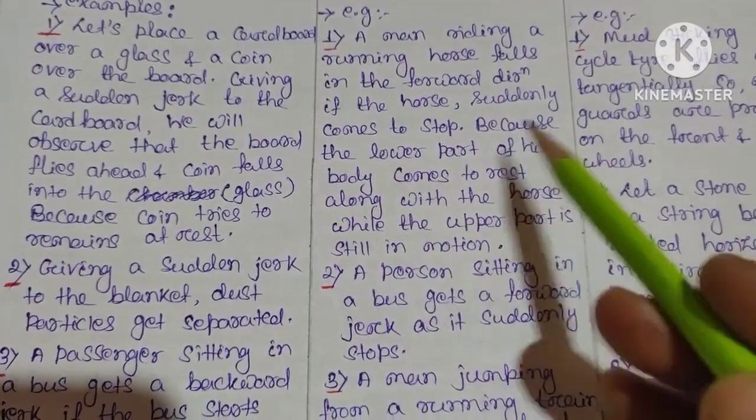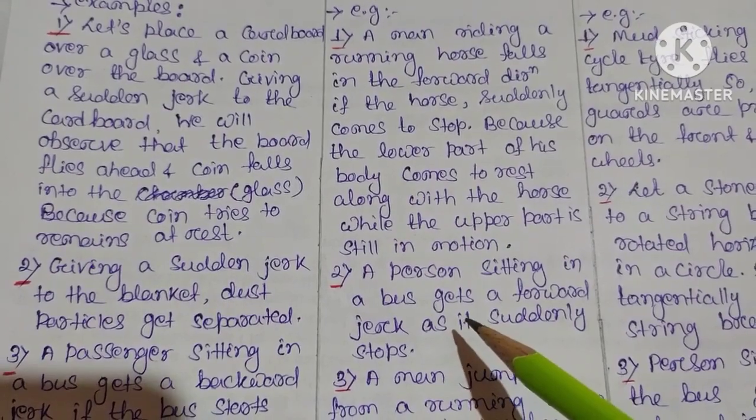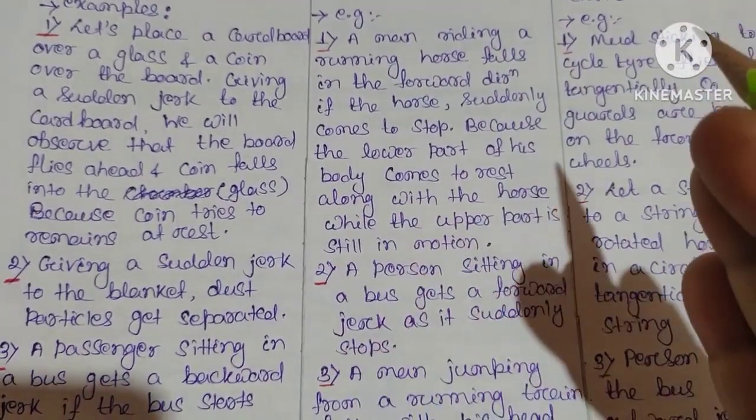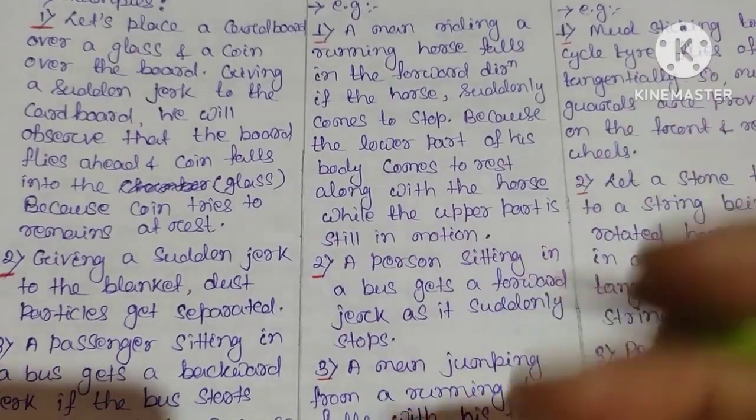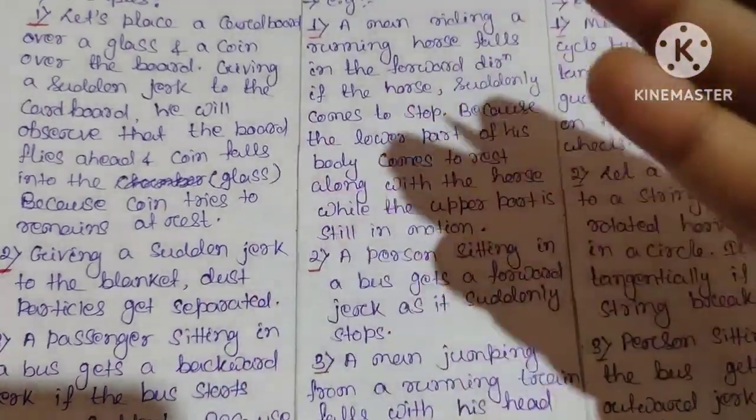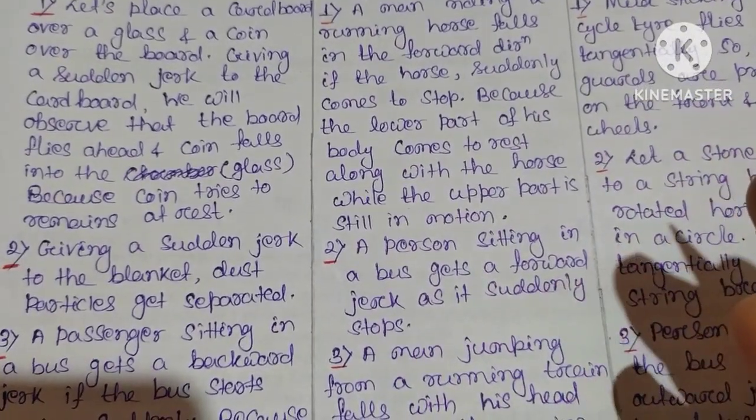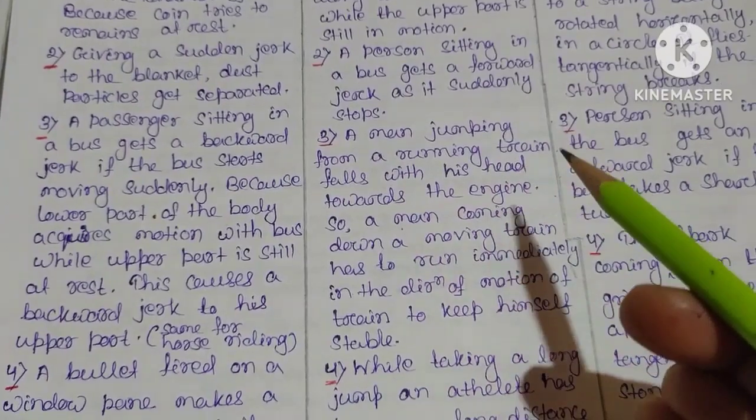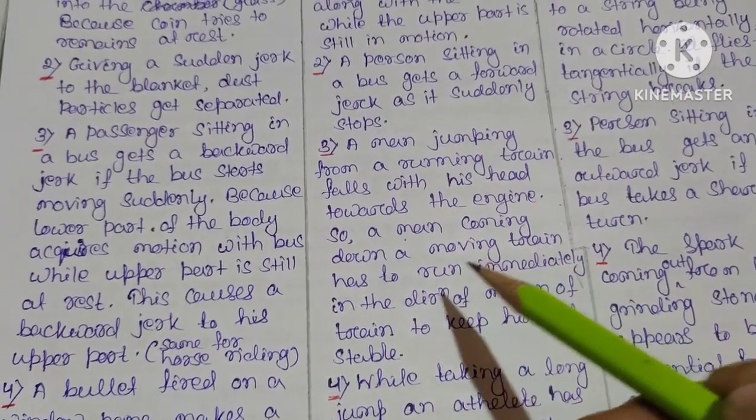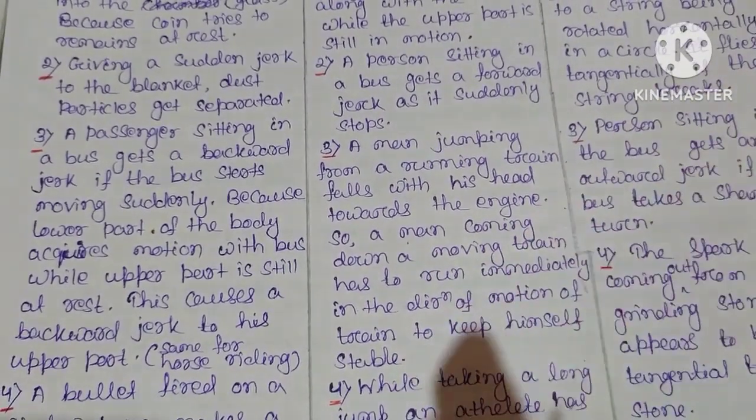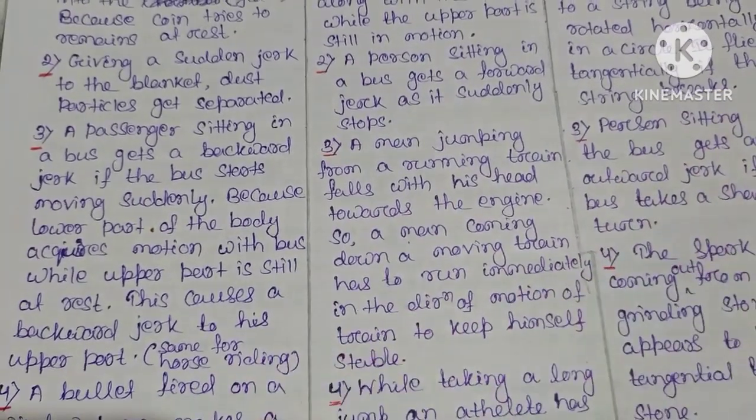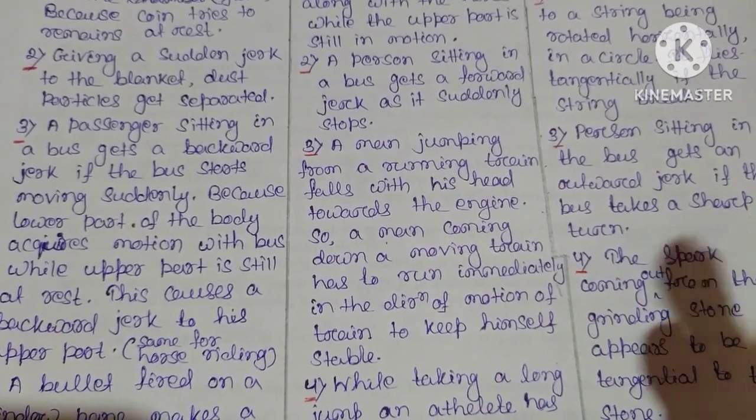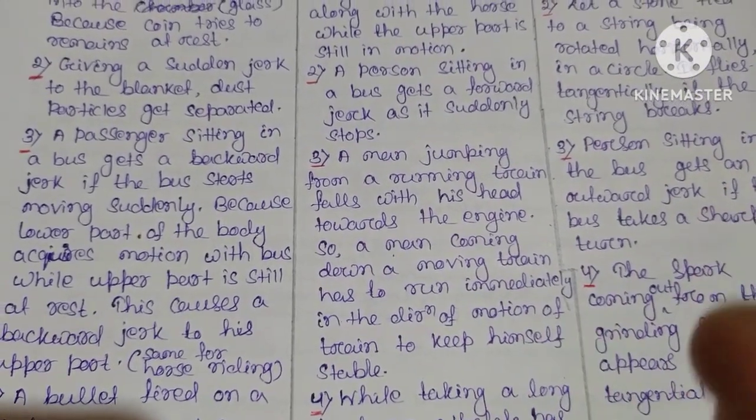The same case when the bus is in motion and suddenly stops. Next example: a man jumping from a running train falls with his head towards the engine. A man coming from a train and then suddenly trying to run - the body is in motion and tries to maintain that motion.